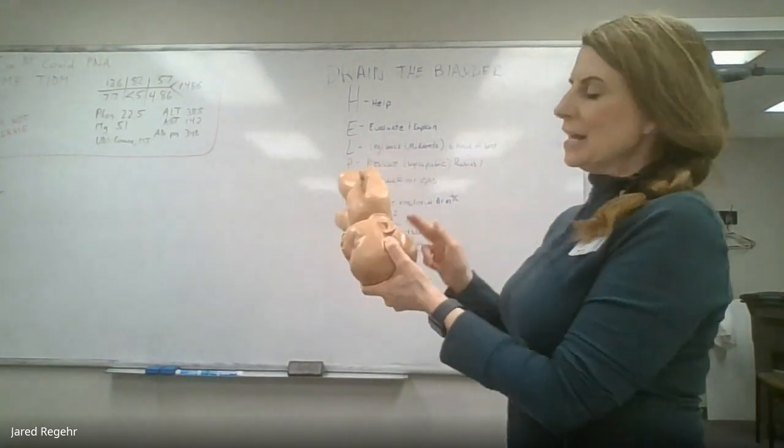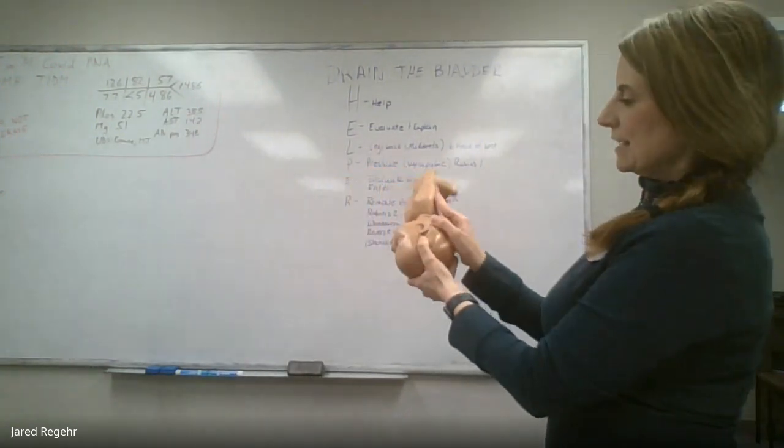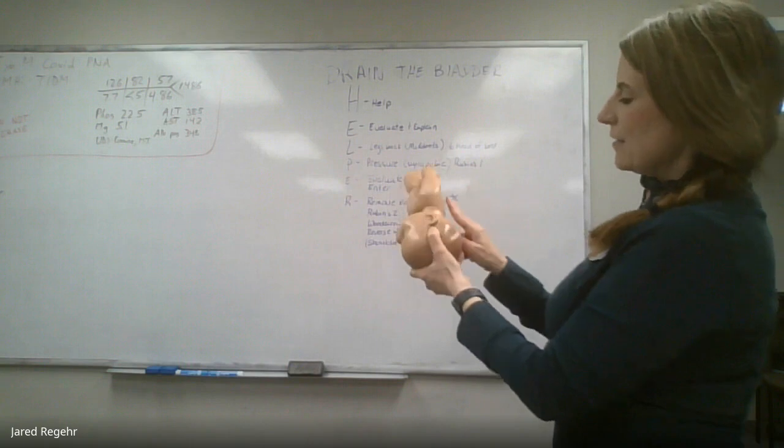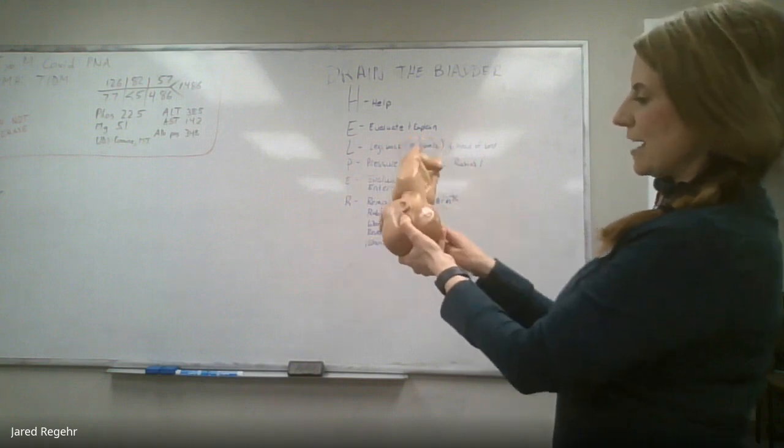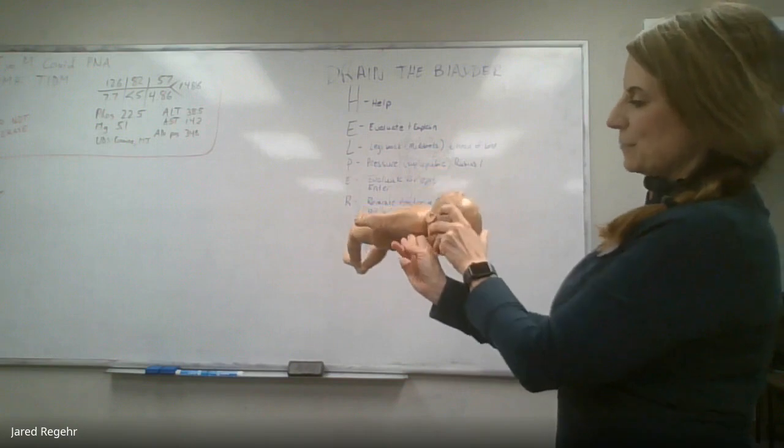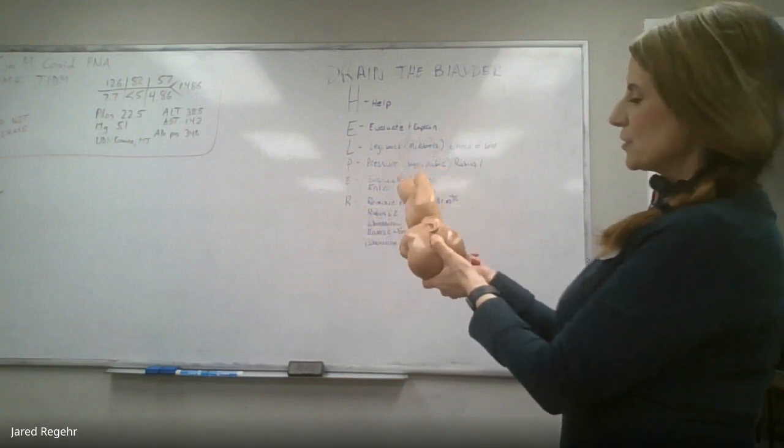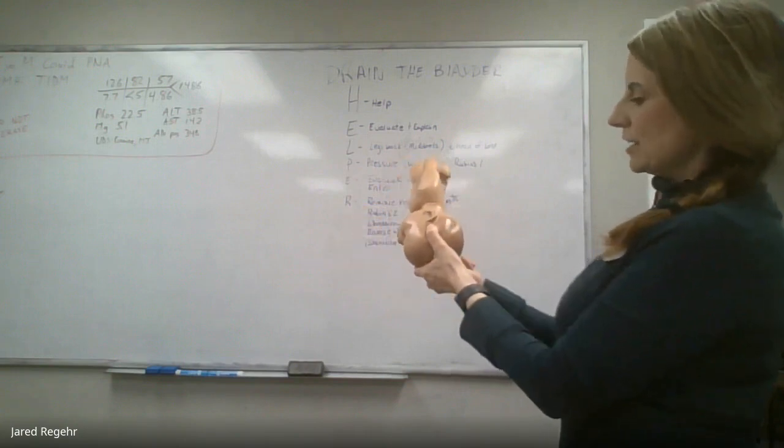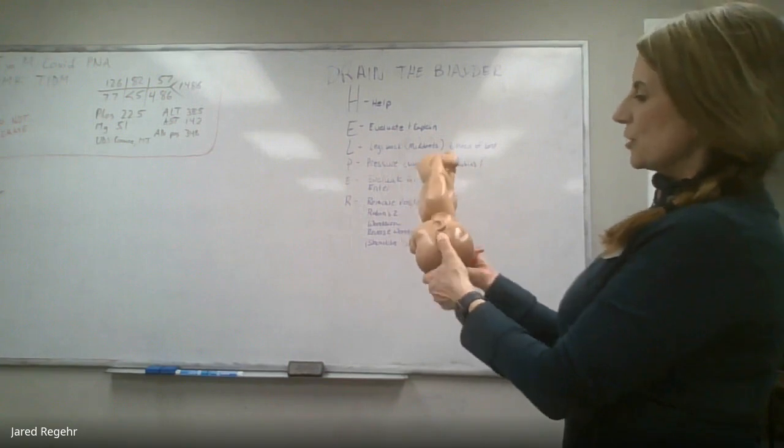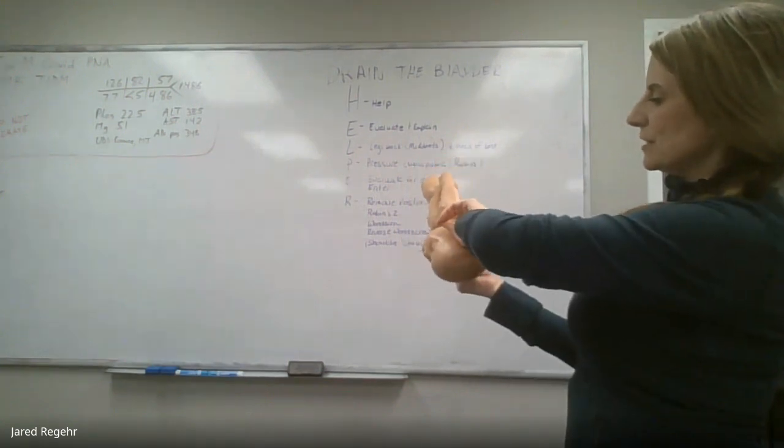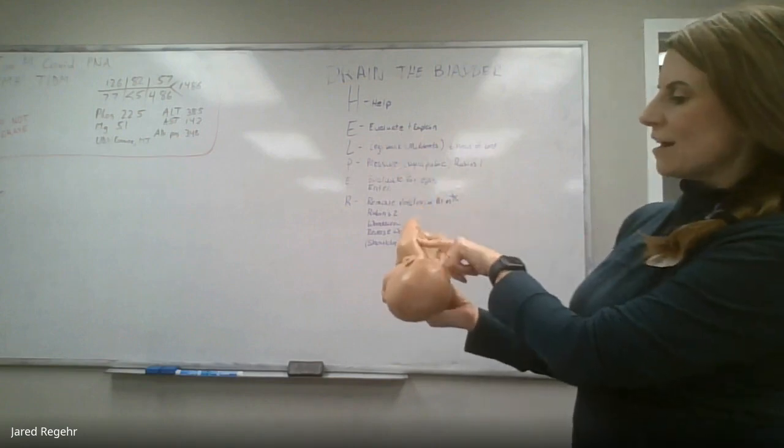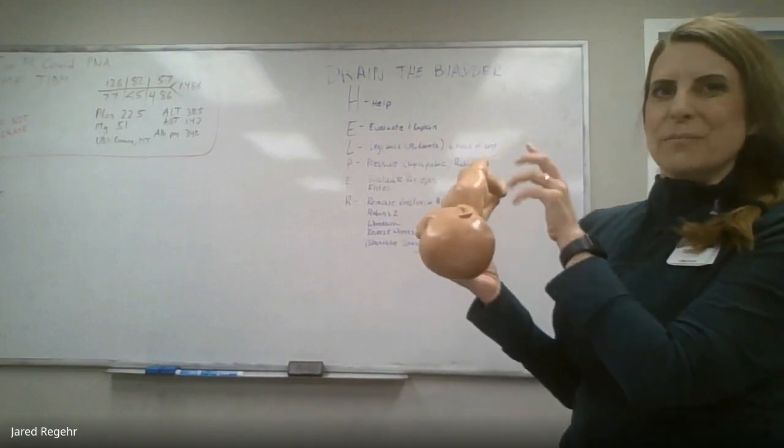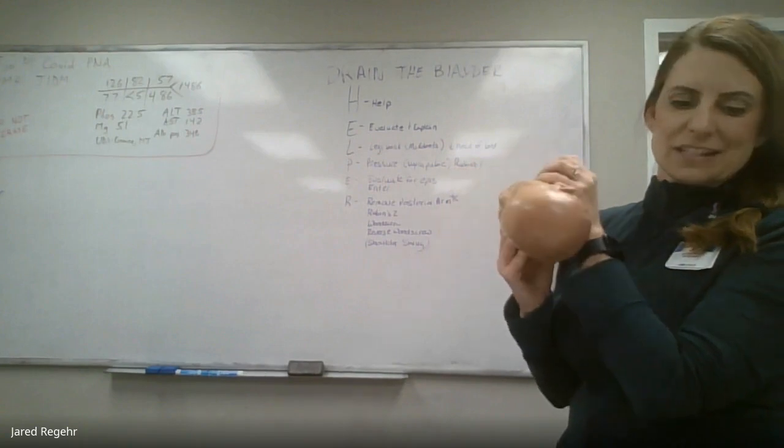So then the Rubens two is where you're just trying to adduct that anterior shoulder. And then the wood screw is where you slide your fingers down and then you're trying to rotate that posterior shoulder. And then the reverse wood screw is like going on the anterior side of the shoulder while still doing your Rubens two and trying to rotate. And so really the whole purpose is just trying to dislodge this anterior shoulder from behind that anterior pubic symphysis.